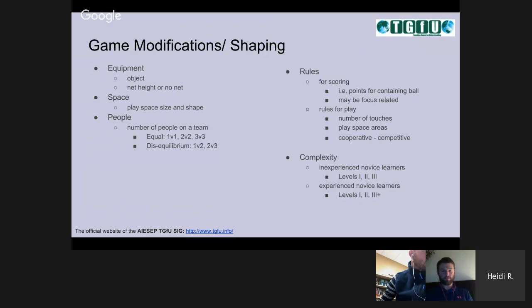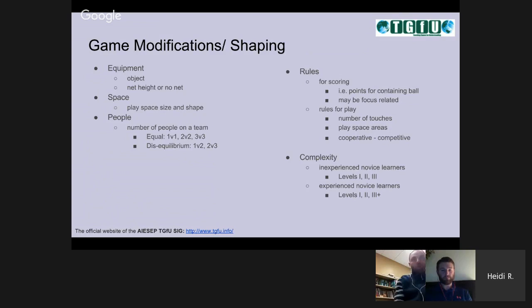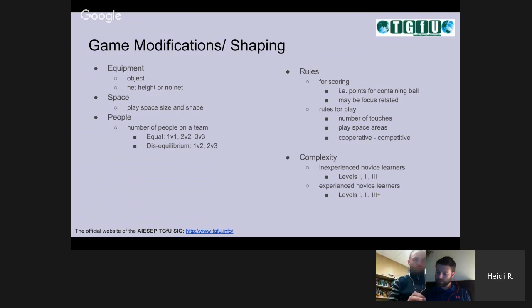Let's move to complexity. I have here inexperienced novice learners and experienced novice learners. Some authors — Mitchell, Griffin, and Oslin, a primary resource I'm using today — describe inexperienced novice learners as second through fifth grade and experienced novice learners as secondary. I like to use these terms because I believe that a person of any age could be at any of these levels. There are going to be three levels in net wall games for both inexperienced and experienced novice learners, though in other game categories there may be a greater number of levels for experienced novices.